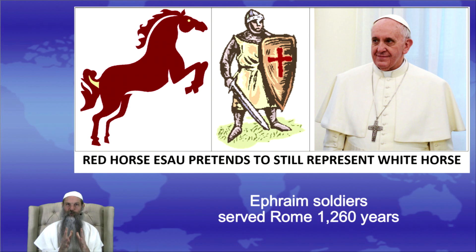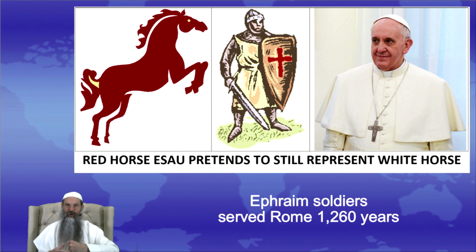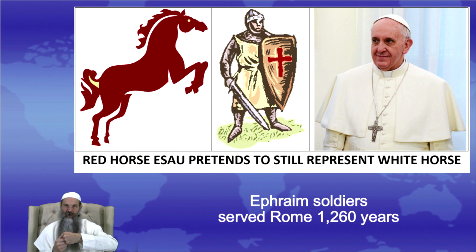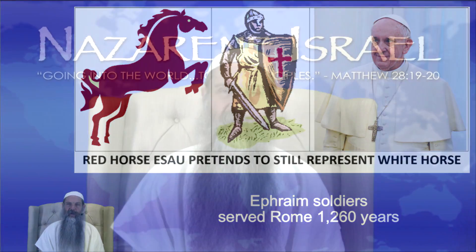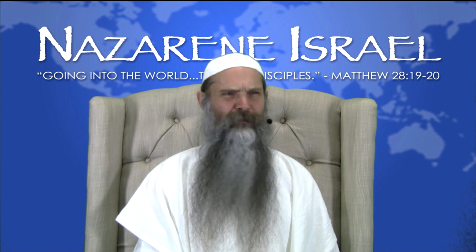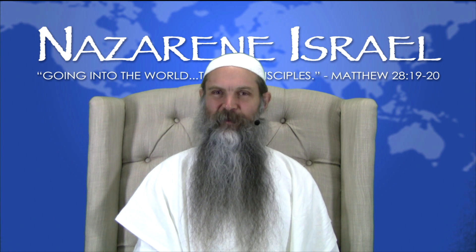We need to understand that what we're dealing with is a mixing between the white and the red horses. Notice the crusader — a Christian soldier in the middle — he's got the white horse tunic on, holding a shield which usually was white with a red cross. The cross represents, as we show in other places, the sign of Tammuz, a sun-worship god. When talking about the red horse, we're talking about basically Luciferism, sun worship. After the Protestant Reformation, the Pope no longer represents Ephraim and should not be wearing white as his primary color — the cardinals wear red, which would be more appropriate.